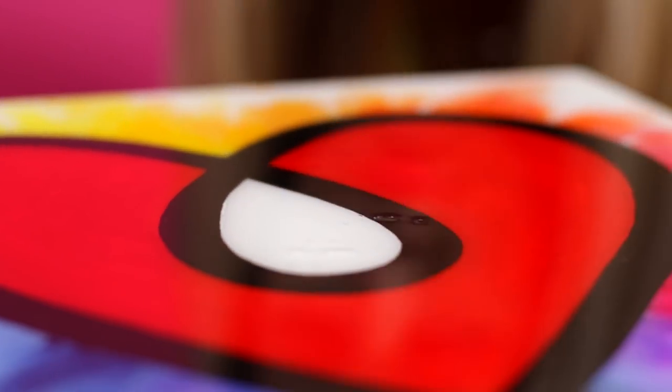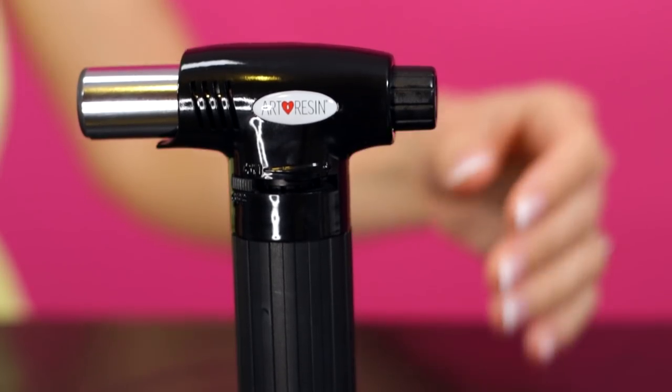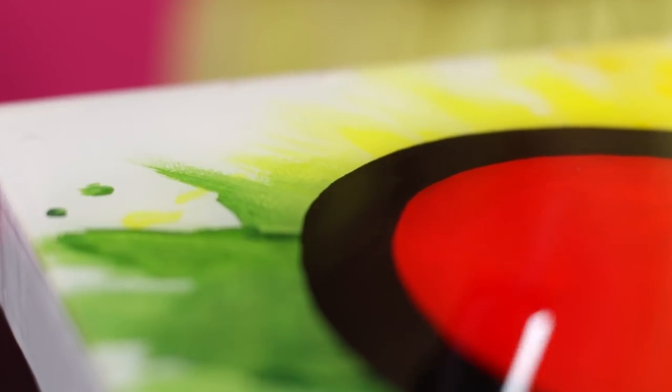After spreading the art resin, air bubbles will begin to rise to the surface. We recommend using our artist torch to pop bubbles for a flawless finish. Just hold the torch a few inches away from the surface, moving it constantly like you would iron clothes.